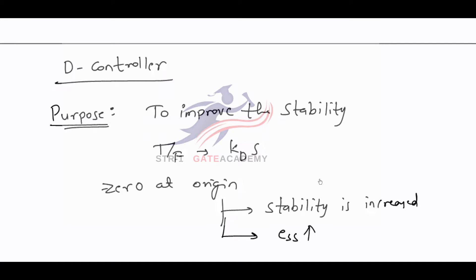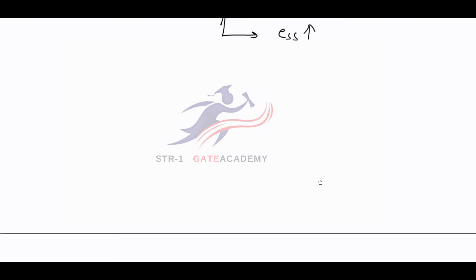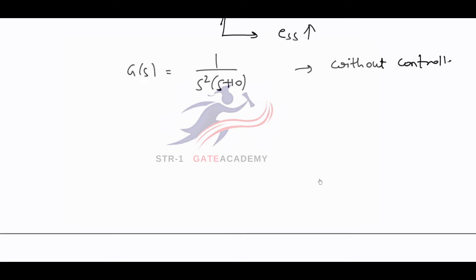Let us consider the same example again. Without controller, if I consider G(S) = 1/(S² × (S+10)), this is without controller. This is a type 2 system, and the characteristic equation of this system is S³ + 10S² + 1 = 0.